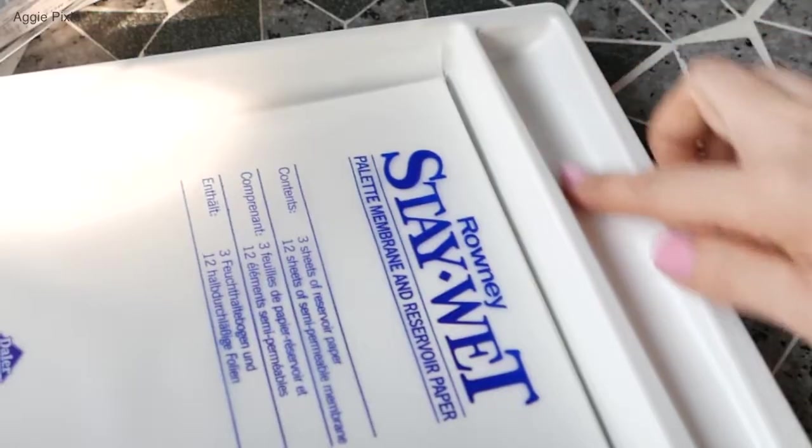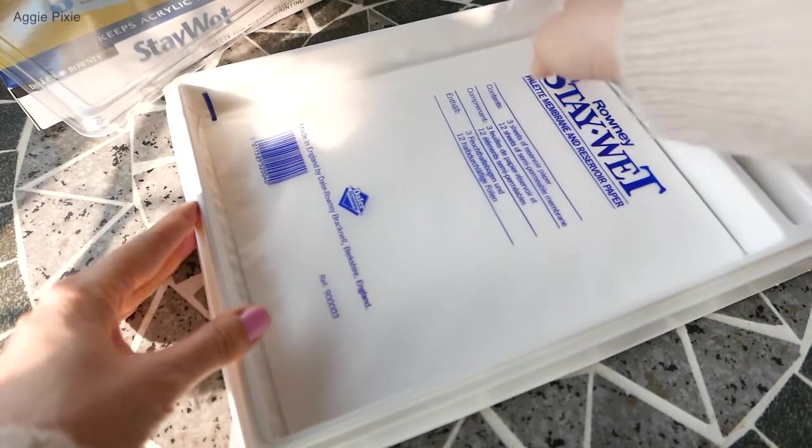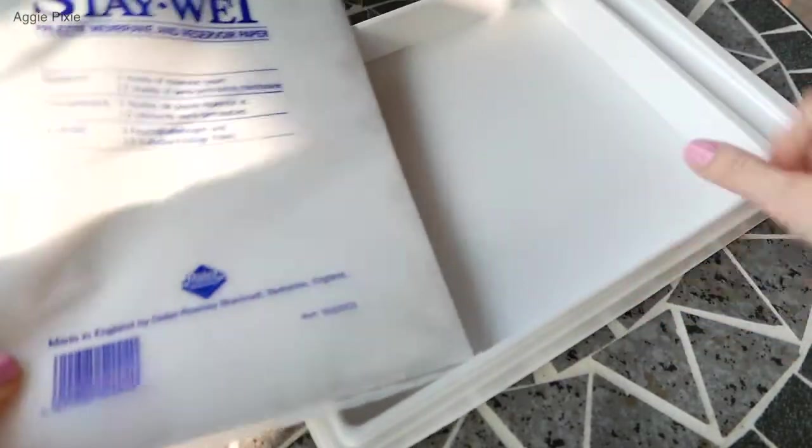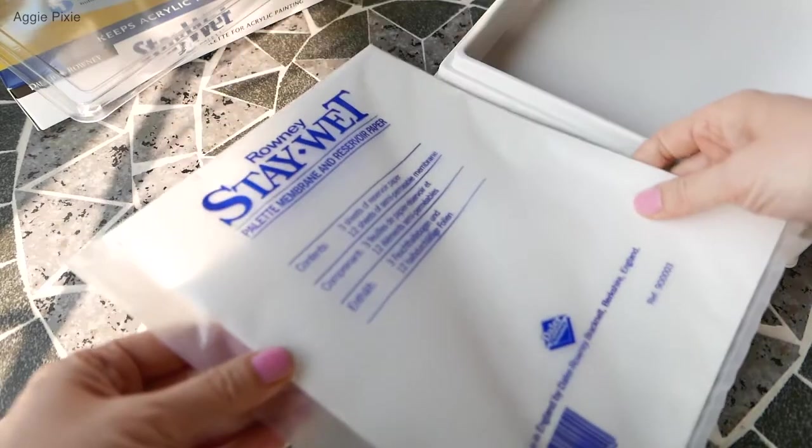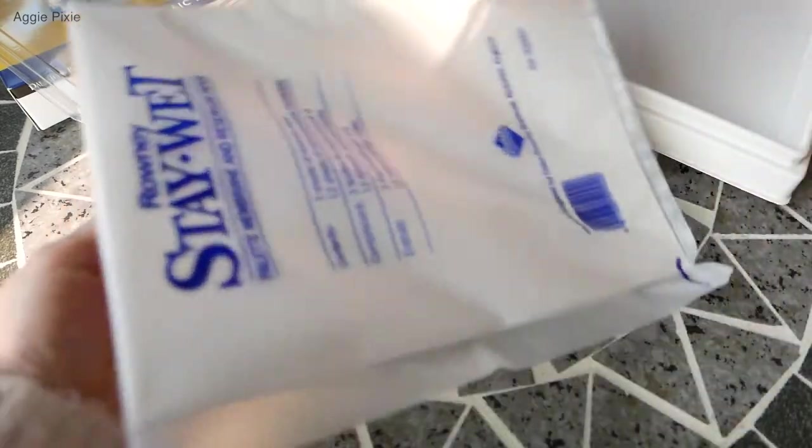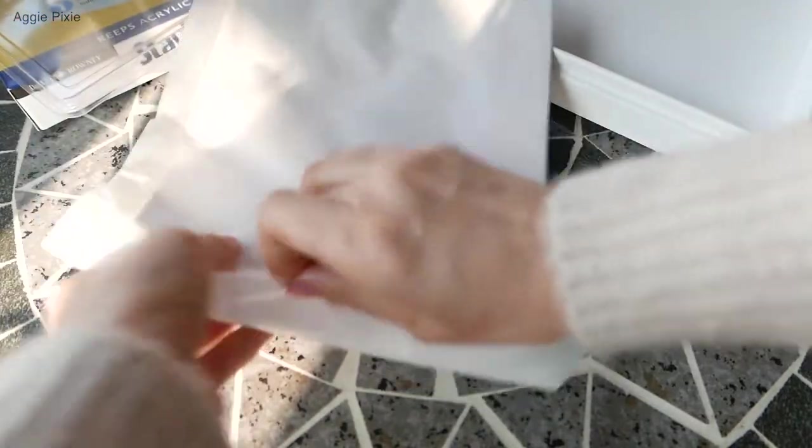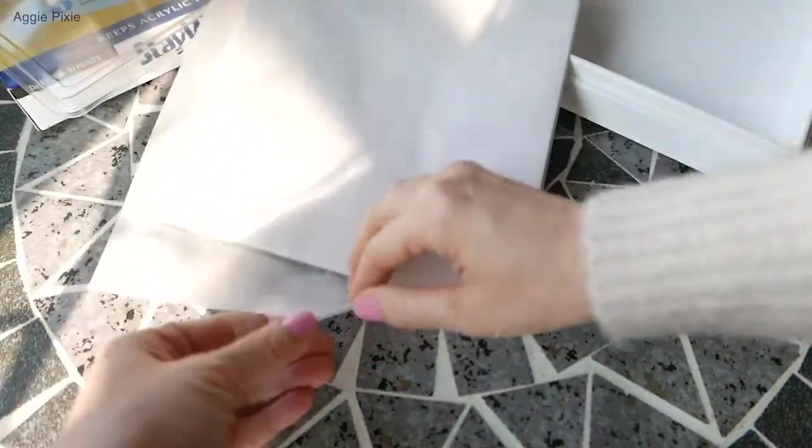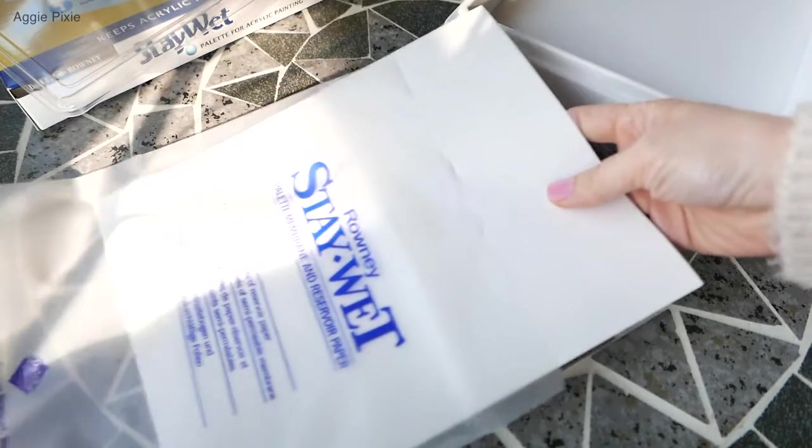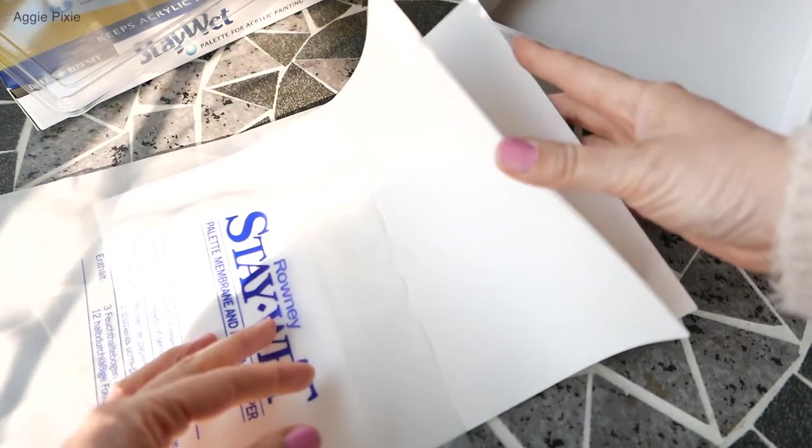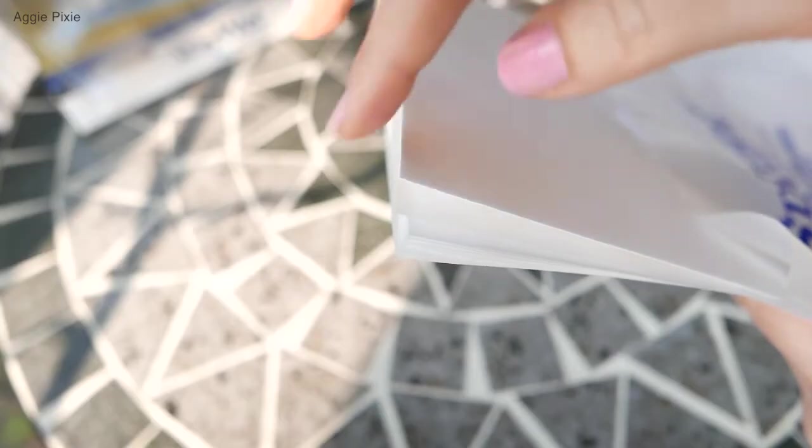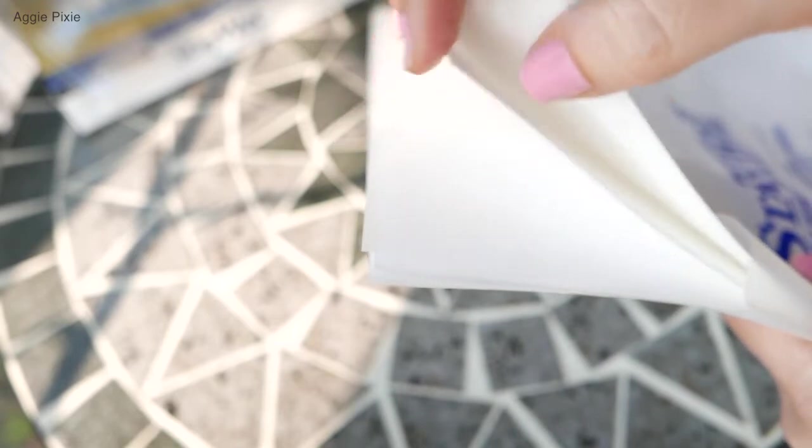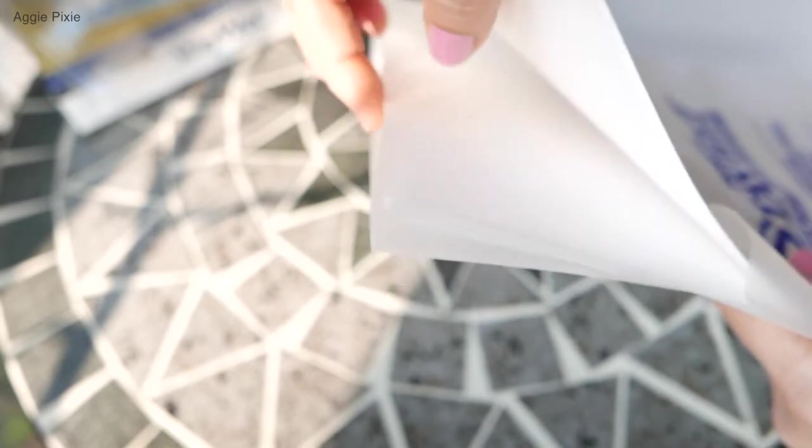Inside it has a little reservoir and right on the back that is where you can put a little bit of water to keep your paint brushes on. So in this packet it contains about 15 sheets. Three sheets are the reservoir paper that is going to hold your moisture. It's a little bit thicker kind of like watercolor paper. Then another 12 sheets of the palette paper, the membrane paper that you're going to put your acrylic paint on which is a little bit thinner.